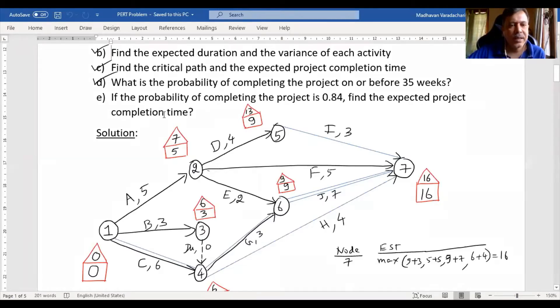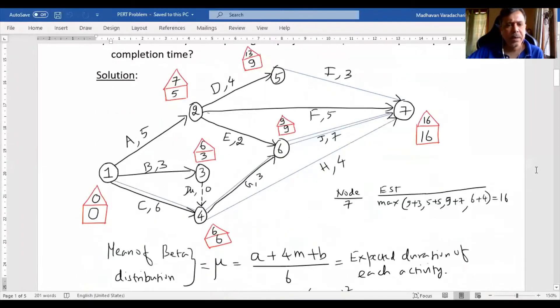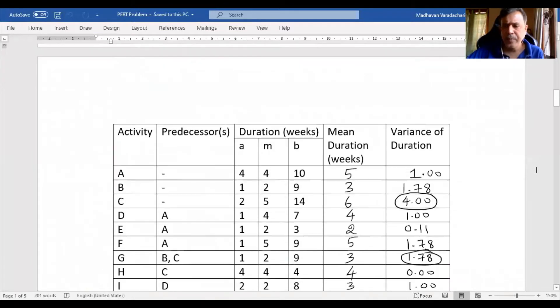So question E reads like this: If the probability of completing the project is 0.84, find the expected project completion time. The probability is given, you need to find the expected project duration.